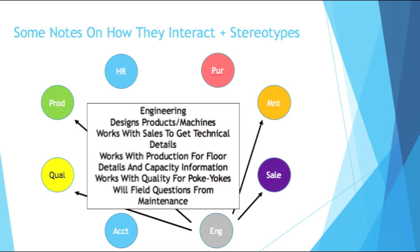Engineering — and here I'm talking about the engineers who design the products or machines, typically mechanical engineers, not the engineers you'd meet in quality or production. Engineering not only designs products and machines, but they also work with sales to get technical details, and with production for floor details and capacity information, which is very important if you're designing a production machine or the part to be produced. They'll work with quality to create poka-yokes — mechanical devices that prevent a mistake from happening — and they'll field questions from maintenance. Typically, maintenance will know the machines better than engineering since they work with them daily, so if maintenance is going to engineering for help, they're pretty much hopeless at that point.